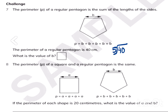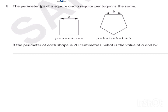For the last two questions, just divide the given number by the number of sides. It's like 40 divided by 5, 20 divided by 4 to get the value of A, and 20 divided by 5 to get the value of B.